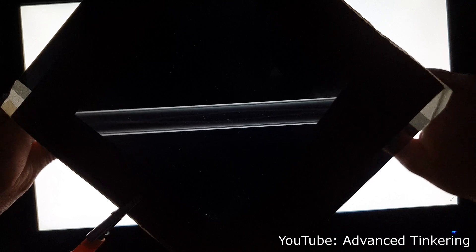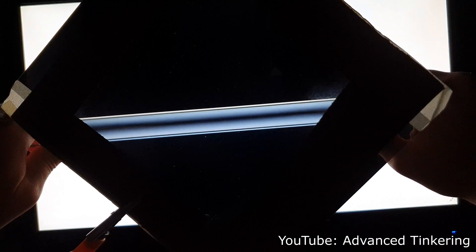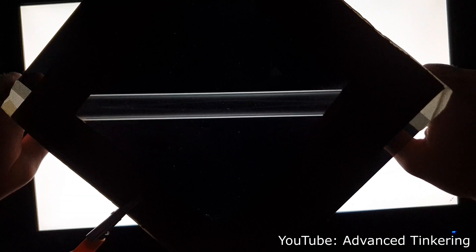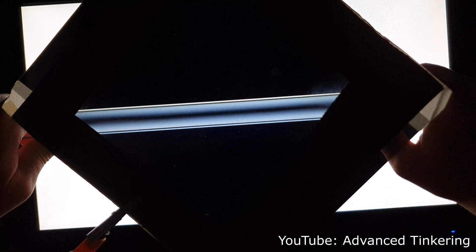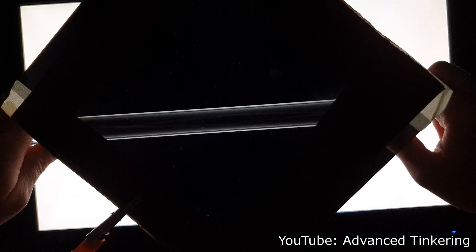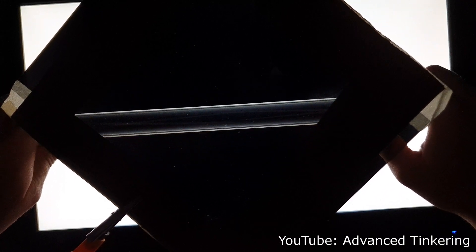If I however apply a force on both ends of the tube, you can see that it gets brighter because I induce stress in the glass. Because of that stress, the glass gets optically active and polarizes the light so it can pass the second polarizing filter.